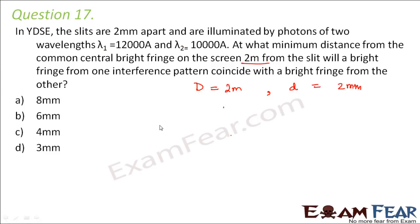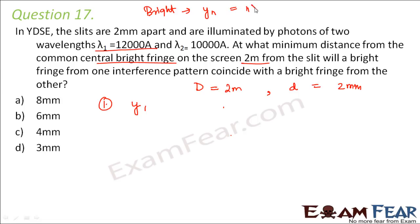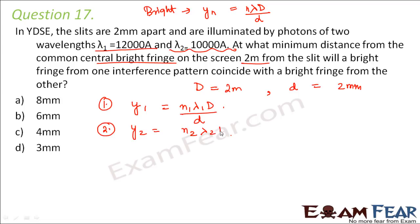We are given the two different wavelengths. Let's find out the location of the bright fringe for both wavelengths. For the first case, lambda 1, the position of a bright fringe is given by: y_n equals n lambda capital D by small d. So y1 equals n1 lambda1 D by d. And in the second case for lambda 2, y2 equals n2 lambda2 capital D by small d.